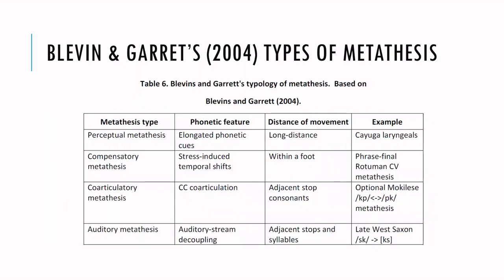Blevins and Garrett's 2004 typology provides different parameters: the type of metathesis, the phonetic feature affected, the distance of movement, and examples. With perceptual metathesis, sounds like liquids and nasals have a tendency to bleed into surrounding sounds — this can go quite a long distance — and the hearer may have trouble perceiving the order of segments. The second type is compensatory metathesis, involving stress-induced shifts within a foot or meter, where segments may be rearranged to better suit the stress patterns of the language.